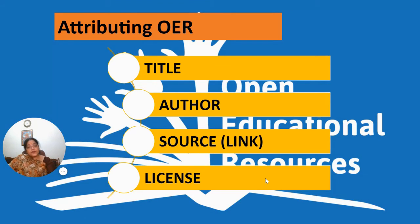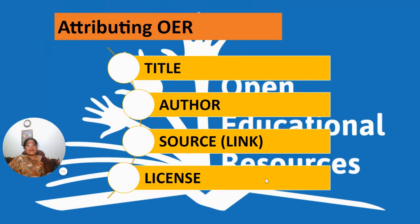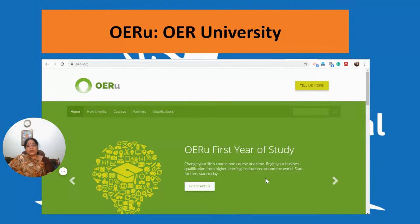The best way of attributing OER is using TASL: Title, Author, Source, and License. For example, the title is 'Understanding OER,' the author is whoever created it, the source is where you got it — say SlideShare or which repository — and the license, whether CC BY, CC BY SA, or CC BY NCSA, whichever applies.